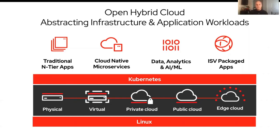Users are also moving services out to edge-based deployments, and they're looking for a way to abstract all these different infrastructure options to better manage their applications. The second thing is that Kubernetes needs to manage a wide array of applications — from traditional enterprise apps like Java EE and .NET, to cloud native microservices, to data analytics and AI and machine learning, as well as third-party ISV packaged applications.